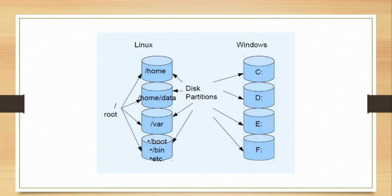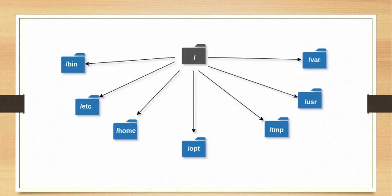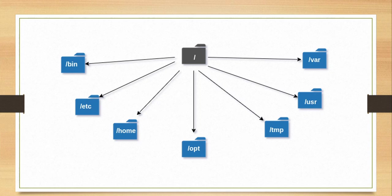Moving on, if we have a look at a compressed directory structure of Linux, we have a single top directory which is shown as a forward slash. This is our root directory, and in Linux everything is placed inside this root directory. This is a kind of a point of origin for the directory structure. Inside this root directory we then have multiple directories: slash bin, slash etc, home, temp, usr, var, and many more. This is a short version of the directory structure just to explain the idea — I have a detailed structure coming ahead.